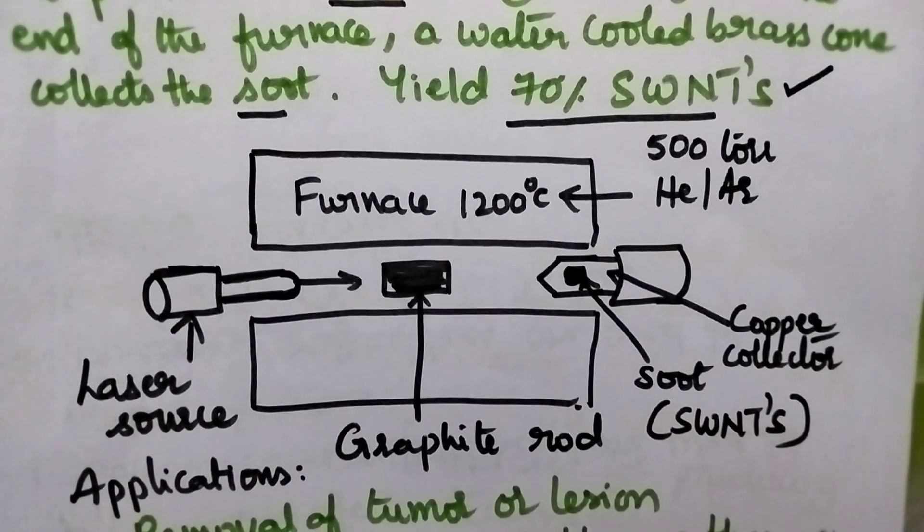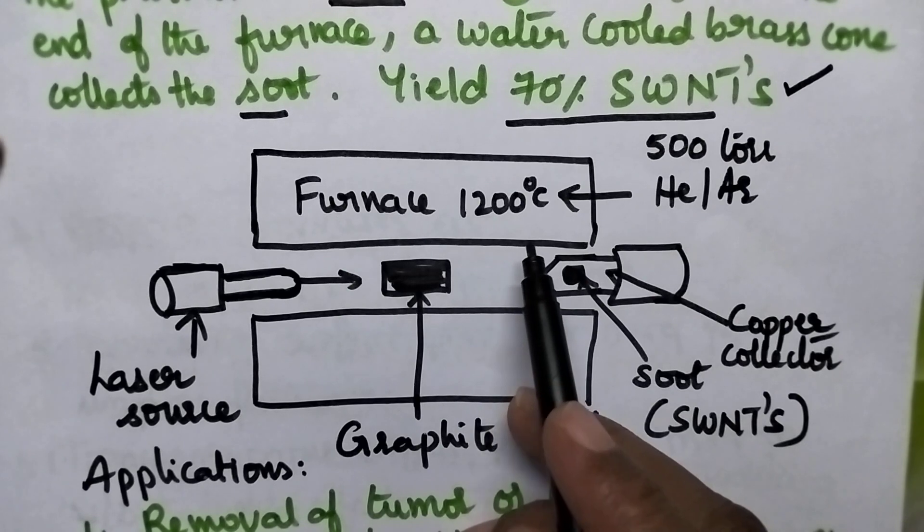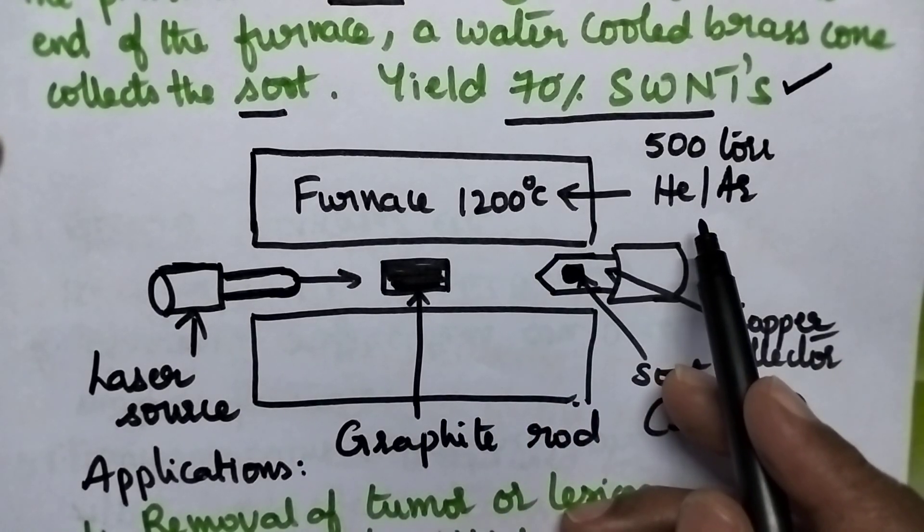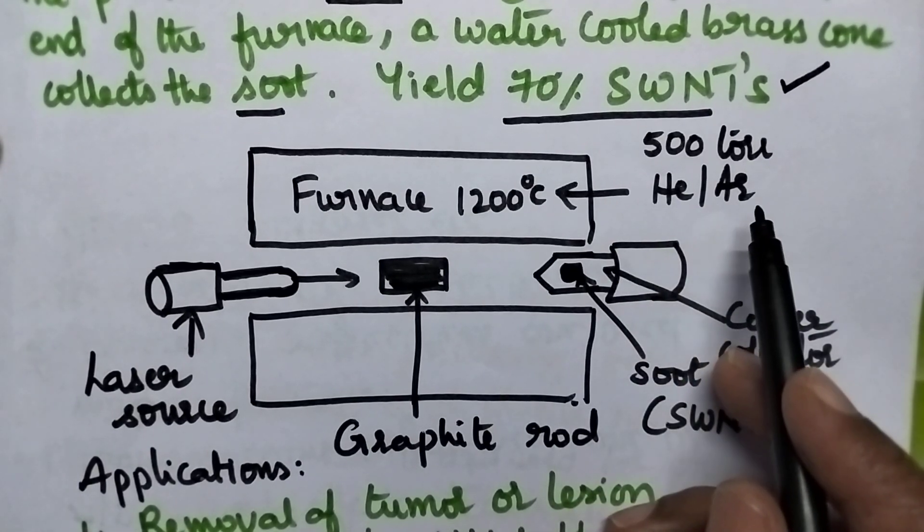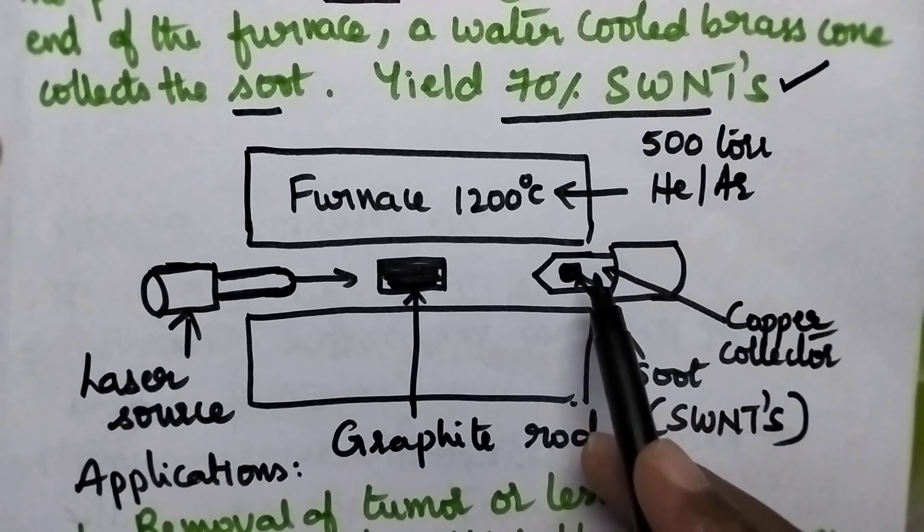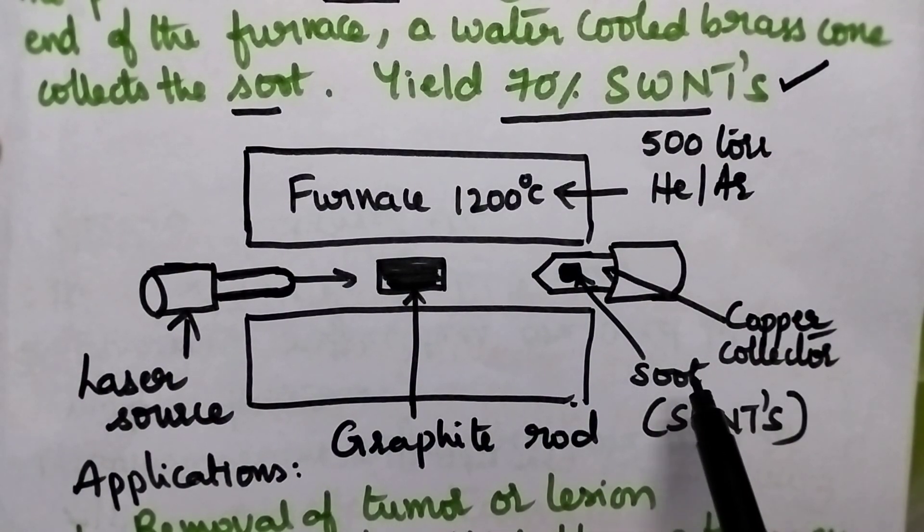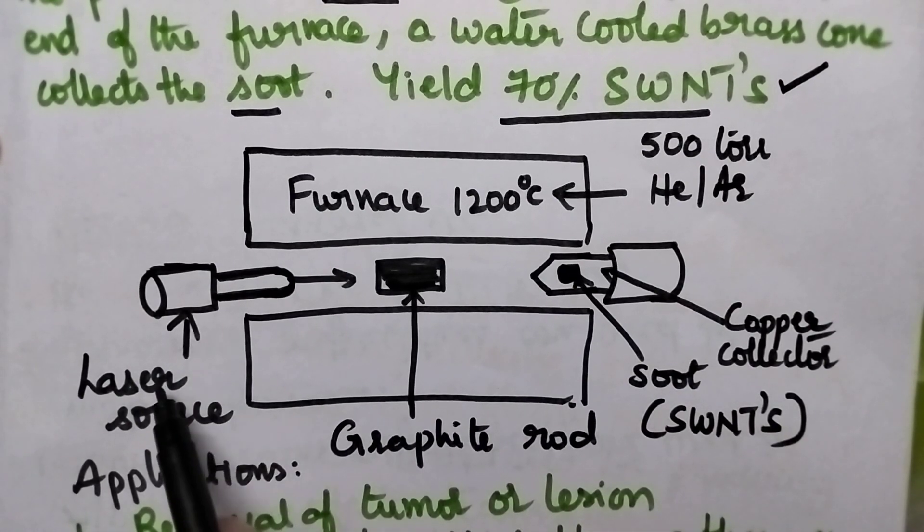Coming to the instrumentation, a furnace is maintained at 1200 degrees Celsius and filled with inert gases like helium or argon at low pressure, 500 torr. On one side, the furnace is supported with a copper collector to collect the deposit. On the other side, it is supported with the laser source.